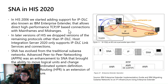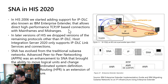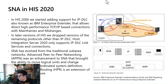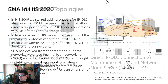SNA has evolved from traditional sub-area networks. Advanced Peer-to-Peer Networking (APPN) was an enhancement to SNA that brought the ability to move logical units and change routing using TCP/IP. So if we have a mainframe, we can establish this connectivity with a Host Integration Server via UDP, which makes it very fast and very efficient, and also removes the need for any intermediate systems. You can find out more on the IBM website on how to configure and implement IBM Enterprise Extender on the mainframe or mid-range.